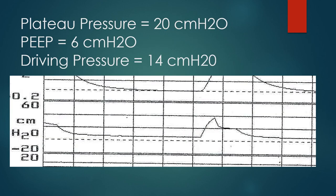Here is an example of measuring driving pressure using a pressure-versus-time scalar waveform. We perform an inspiratory hold maneuver to obtain the plateau pressure — in this example, 20 cm H₂O. We then subtract the PEEP, which is 6 cm H₂O. So 20 minus 6 equals 14 — the driving pressure is 14, which is an acceptable level.